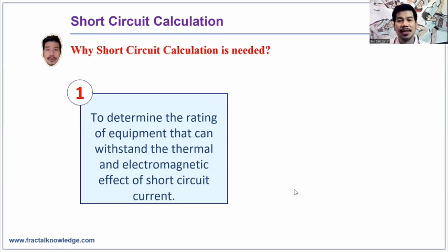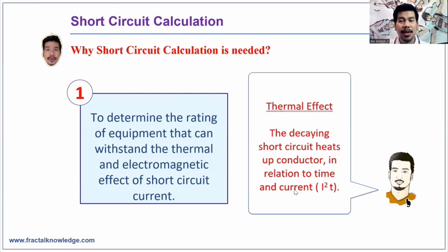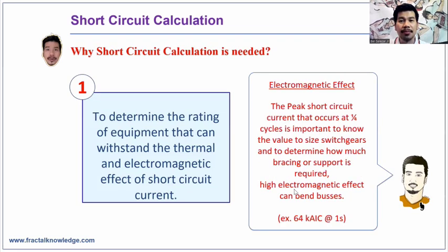The first reason is to determine the ratings of equipment that can withstand the thermal and electromagnetic effect of short circuit current. The thermal effects of short circuit current heats up the conductor in relation to time and the square of the current. The electromagnetic effect that occurs on the one-fourth cycle of the sinusoidal wave when the fault occurs is the power of the fault which can bend buses and damage switchgears, even take away life.